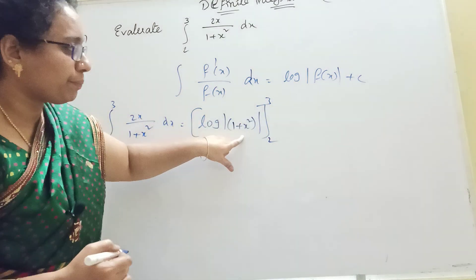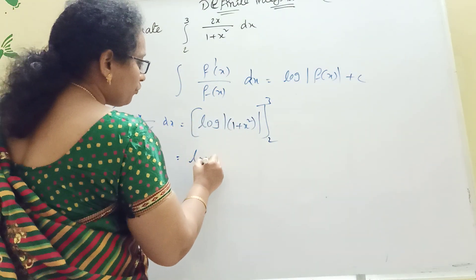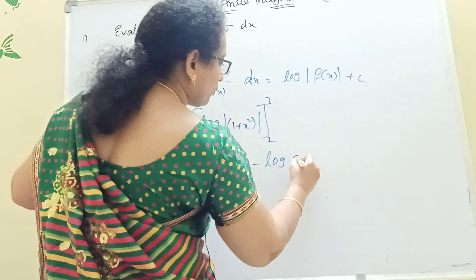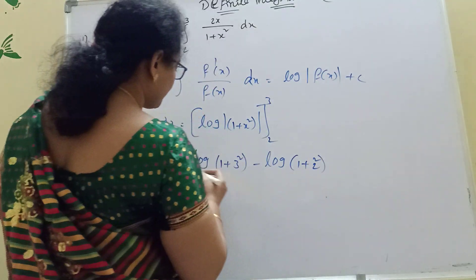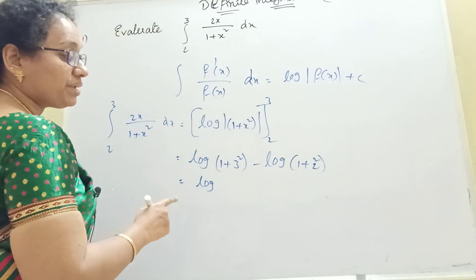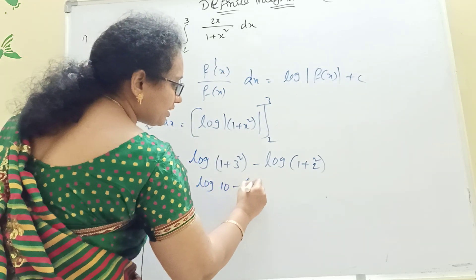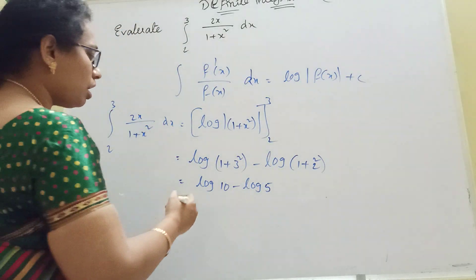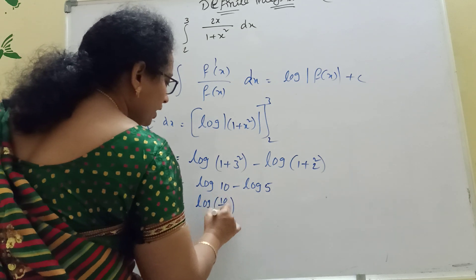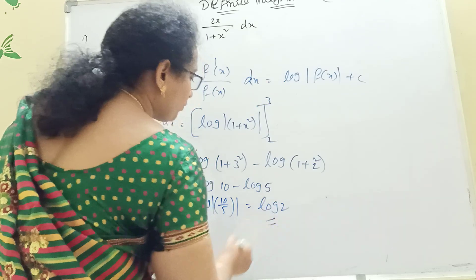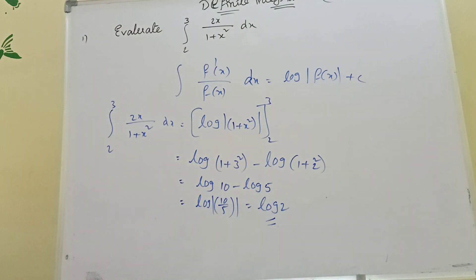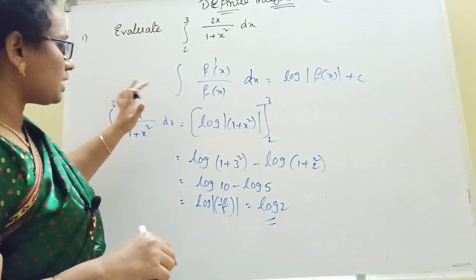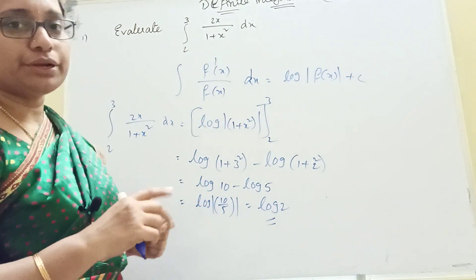This is the formula — upper limit minus lower limit. So we get log of (1 plus 3 squared) minus log of (1 plus 2 squared), which is log mod(1 plus 9) minus log(4 plus 1). That gives log 10 minus log 5. Using the property log a minus log b equals log(a/b), we get log(10/5), which is log 2. The answer is log 2.